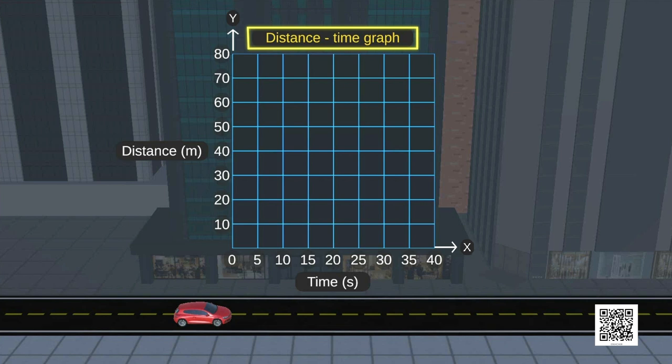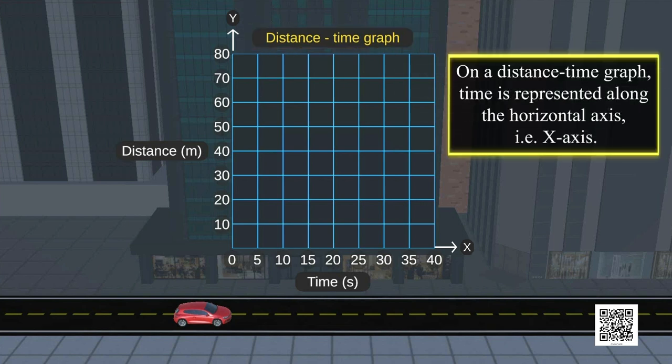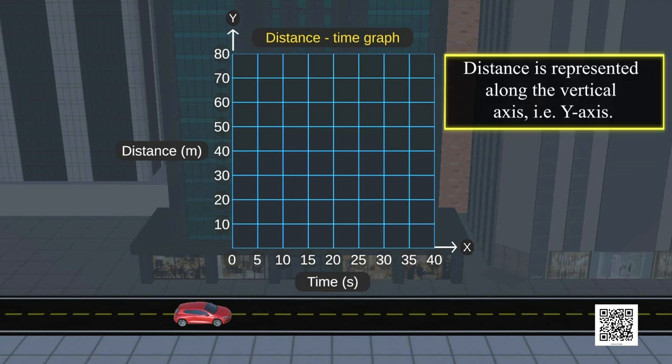moving with uniform speed. On a distance-time graph, time is represented along the horizontal axis, i.e., x-axis. On the other hand, distance is represented along the vertical axis, i.e., y-axis.